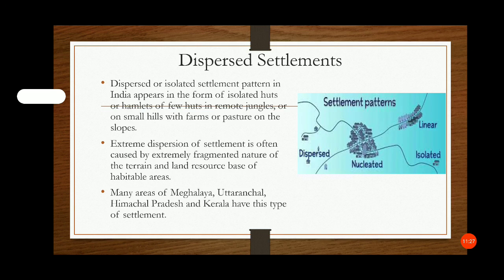Dispersed or isolated settlement pattern in India appears in the form of isolated huts or hamlets of a few huts in remote jungles or on small hills, with farms or pastures on the slopes. Extreme dispersion of settlement is often caused by the extremely fragmented nature of the terrain and land-based livelihoods in sparsely inhabited areas. Many areas of Meghalaya, Uttaranchal, Himachal Pradesh, and Kerala have this type of settlement.